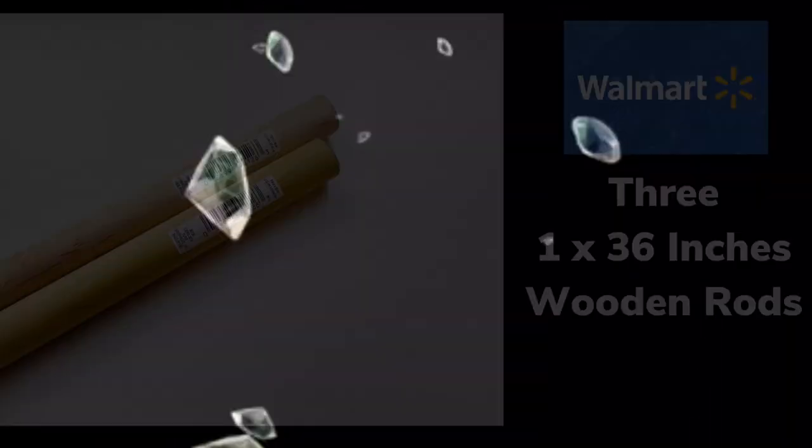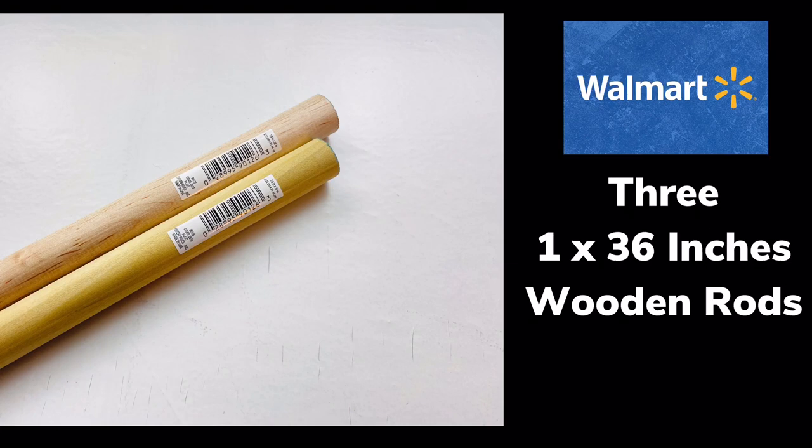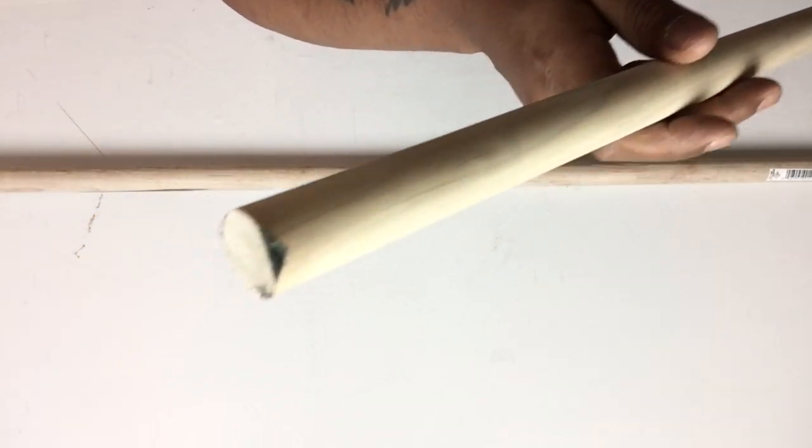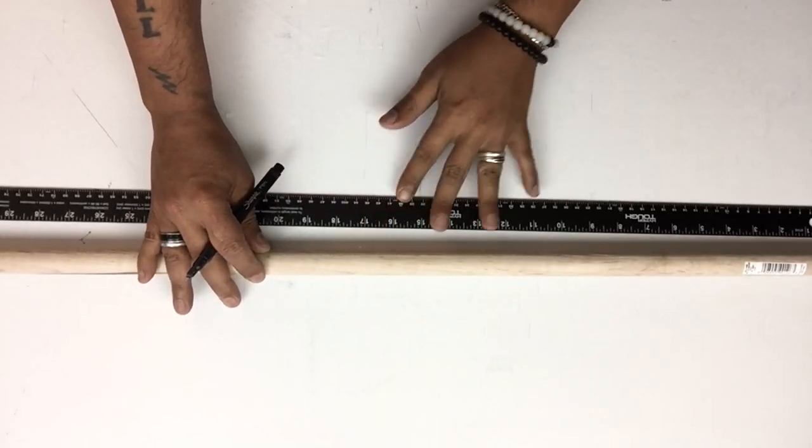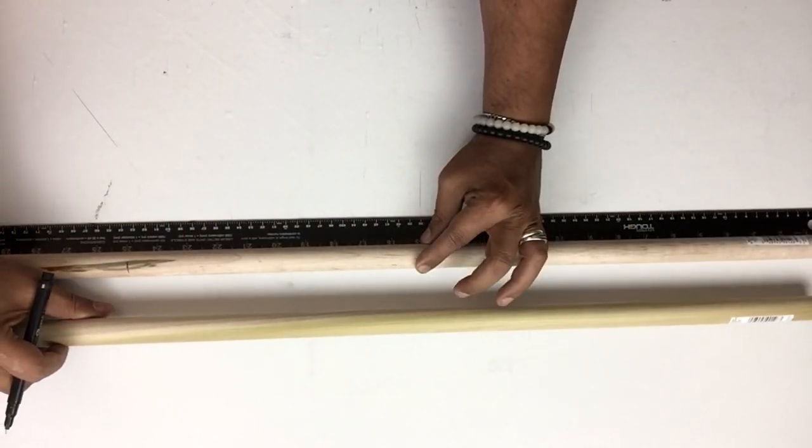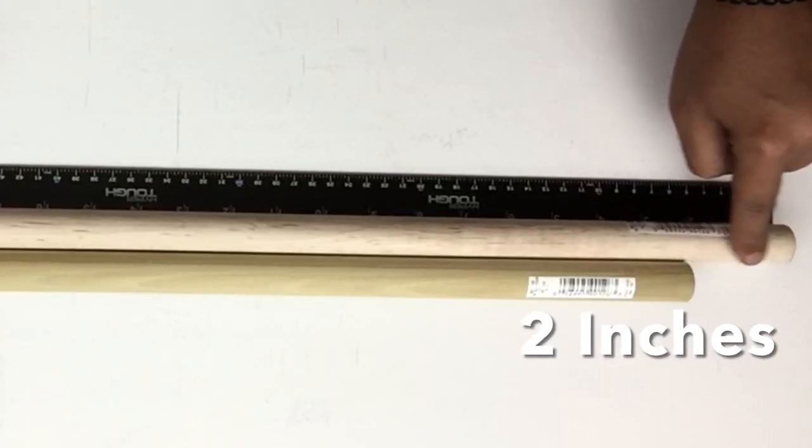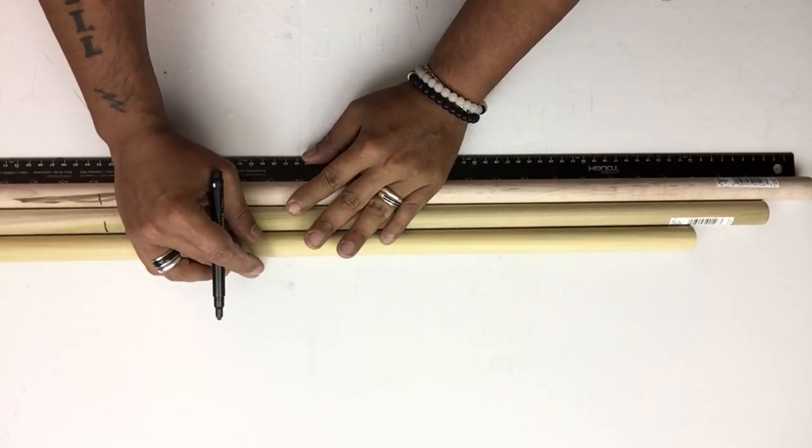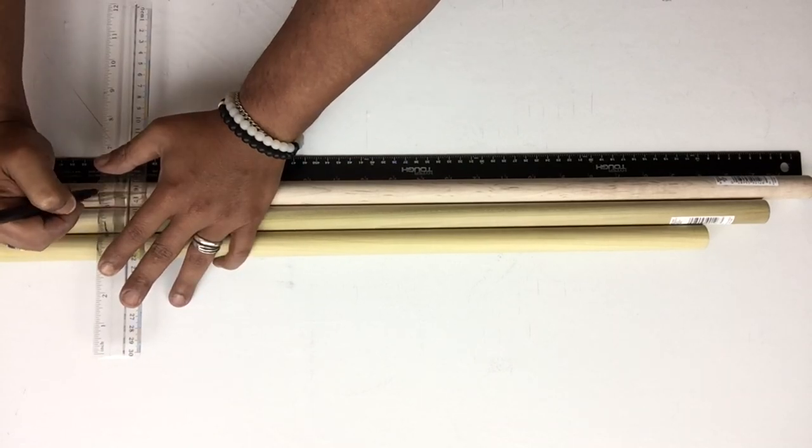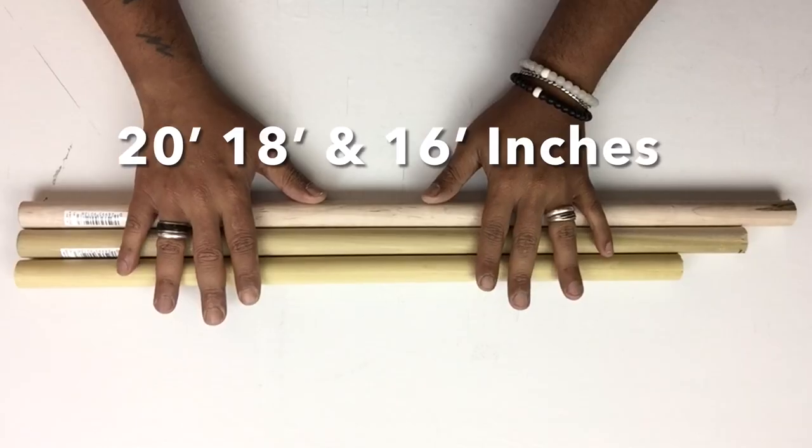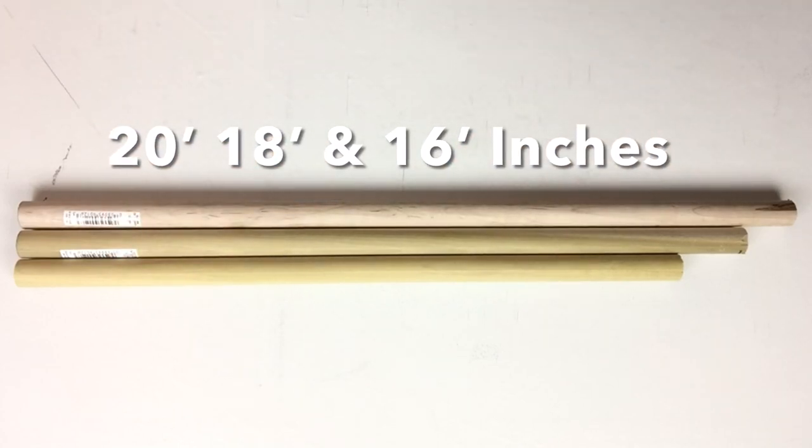Next, I'll be working on the lamp bases, starting with three wooden rods. I took all three wooden rods and placed them next to each other, two inches lower from each other. Once I was done, I took my ruler and placed markings so I could cut them evenly. The measurements are 20, 18, and 16 inches.